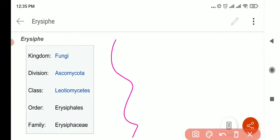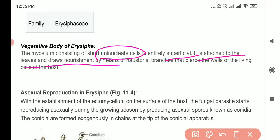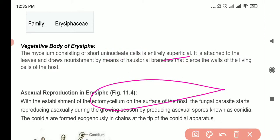The vegetative body has short uninucleate cells that are superficial. It is attached to the leaf and draws nourishment by haustorial branches. Superficial means it's on top of the leaf surface. They exist like this.